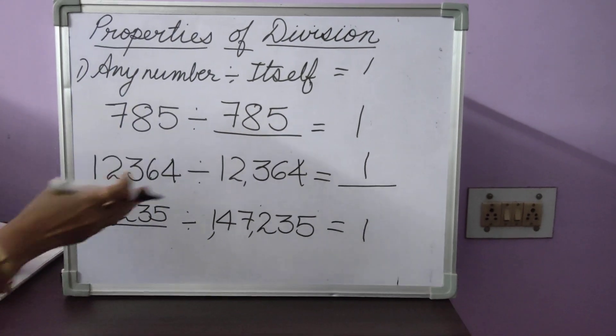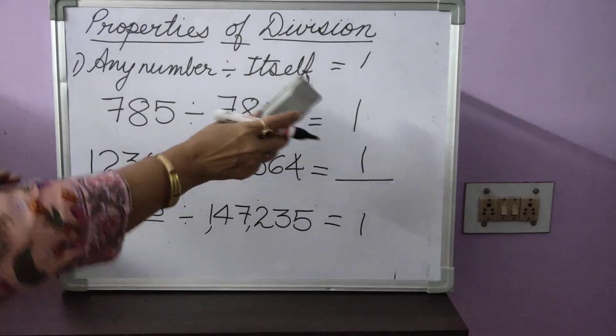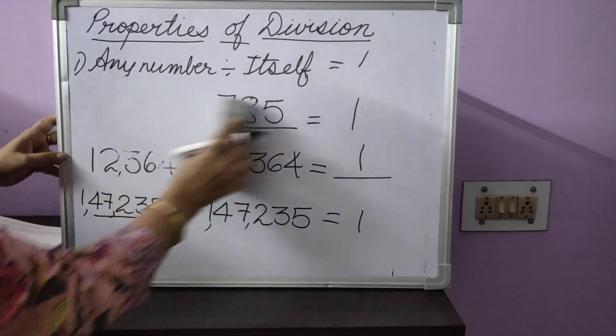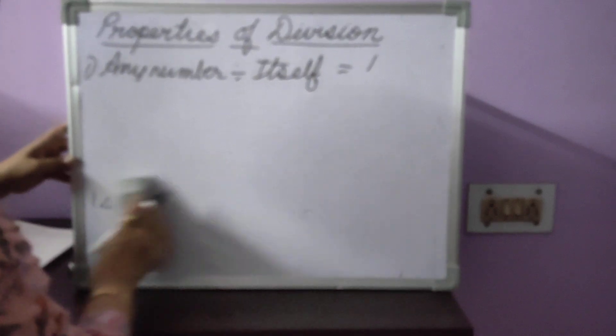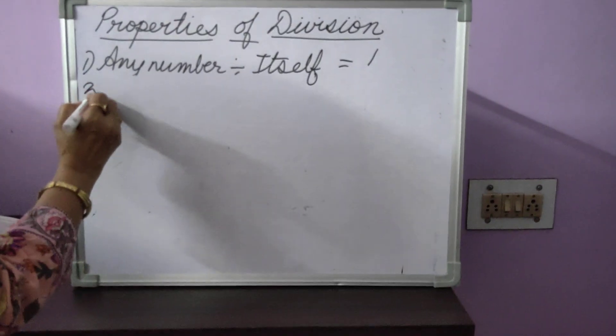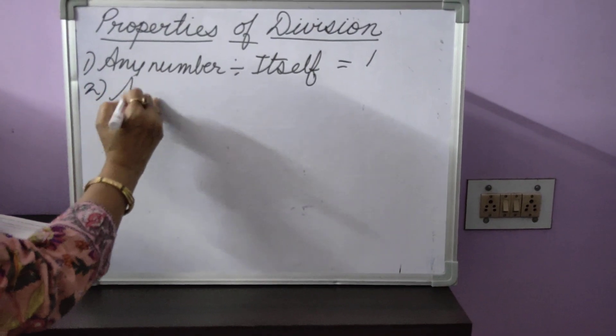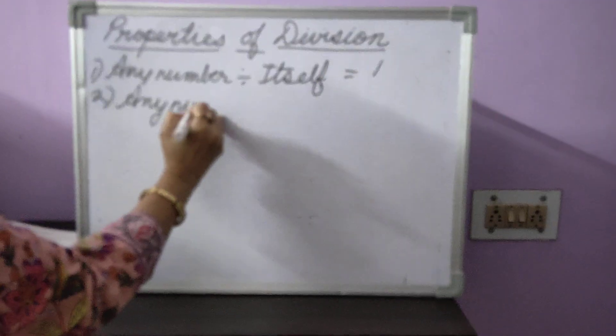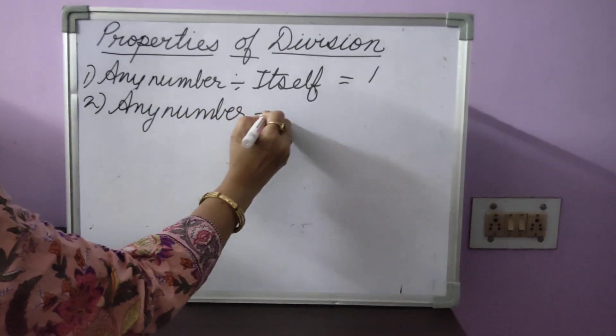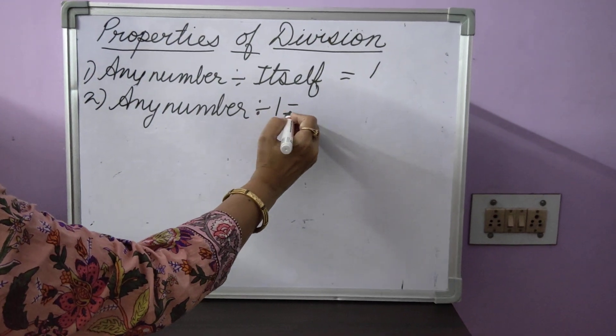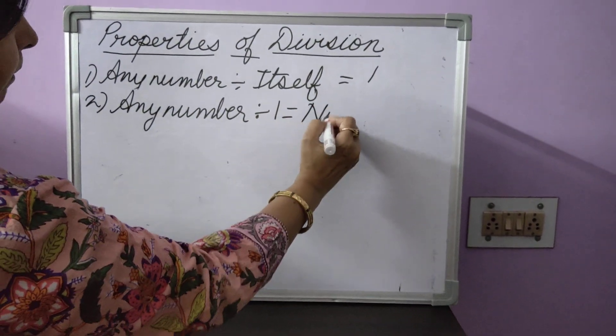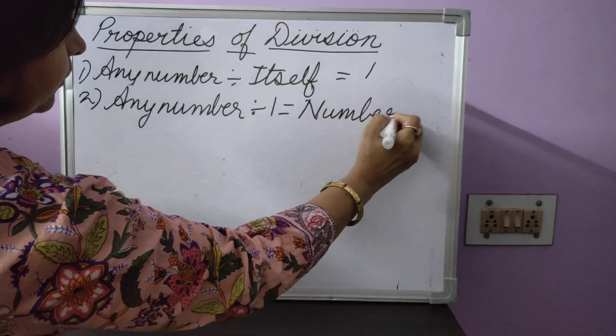So, this way you can find out the missing numbers wherever you have 1. Now, the second property is any number divided by 1 will be equal to the number itself.